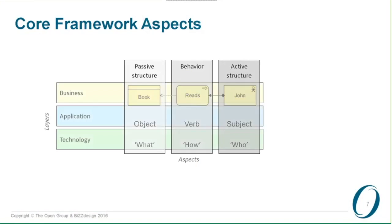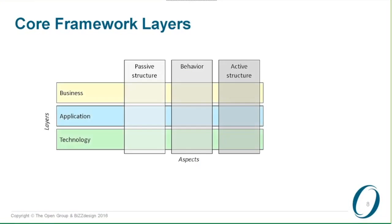In the first version we have three layers — business, application, and technology — which were, and perhaps still are, the most common layers seen in enterprise architecture approaches. Some people might say you want an information layer as well, but it's very important to note that ArchiMate uses the passive structure column to position information architecture. So it's not a separate layer but is integrated across these three layers — information really resides in the passive structure aspect.